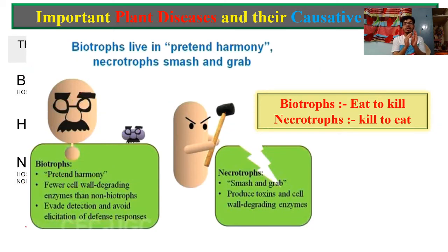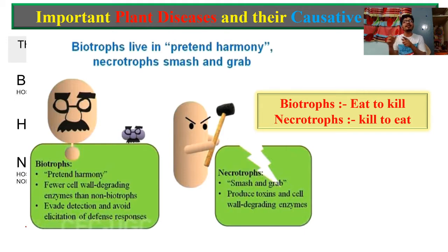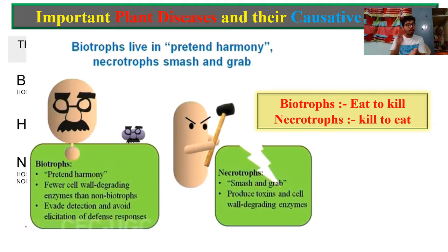In brief, if someone asks you the meaning of biotropes and necrotropes, you can say: biotropes live in pretend harmony, but necrotropes have a nature of 'smash and grab.' Biotropes eat while keeping the host alive — they 'eat to kill' slowly — whereas necrotropes first kill and then eat. This distinction is really very important to understand in plant pathology.